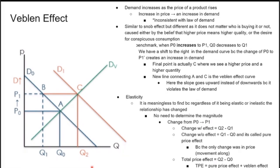The Veblen effect is more complicated because it goes against the law of demand — the slope is positive and going up. Demand increases as the price of a product rises: an increase in price leads to an increase in demand. This is inconsistent with the law of demand. It's similar to the snob effect, but the difference is that it doesn't matter who is buying it — it's caused either by the belief that higher price means higher quality, or by the desire for conspicuous consumption. The benchmark sees P0 increase to P1 and a shift to the right in the demand curve, because the price increase creates an increase in demand instead of a decrease.